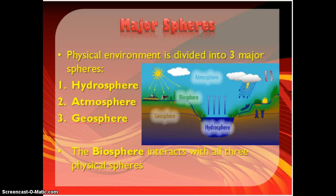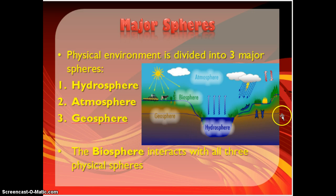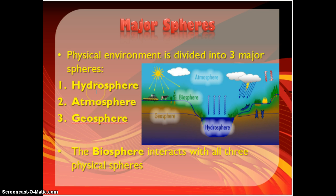Today we're going to start talking about modern times and all of those forces that shape the Earth and have made it the way it is today. We need to talk about three major spheres: the hydrosphere, the atmosphere, and the geosphere. We're going to start off today talking about the geosphere, which is the land and plate tectonics. Then later we'll go into the atmosphere, and then the hydrosphere with the water cycle. The biosphere is going to be the focus of our next unit — that's all the living things, and it interacts with all three of these spheres.